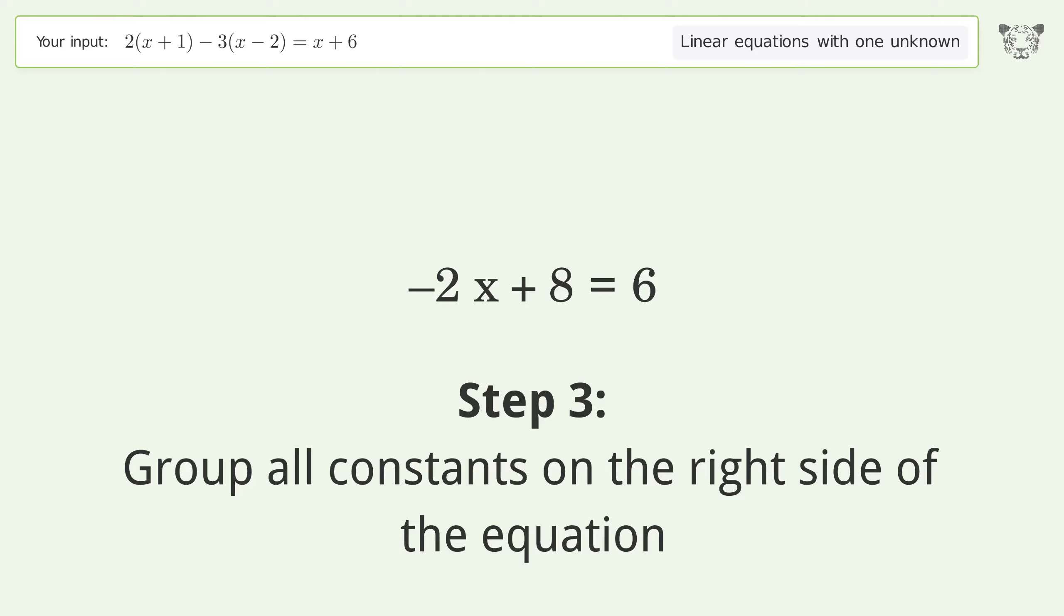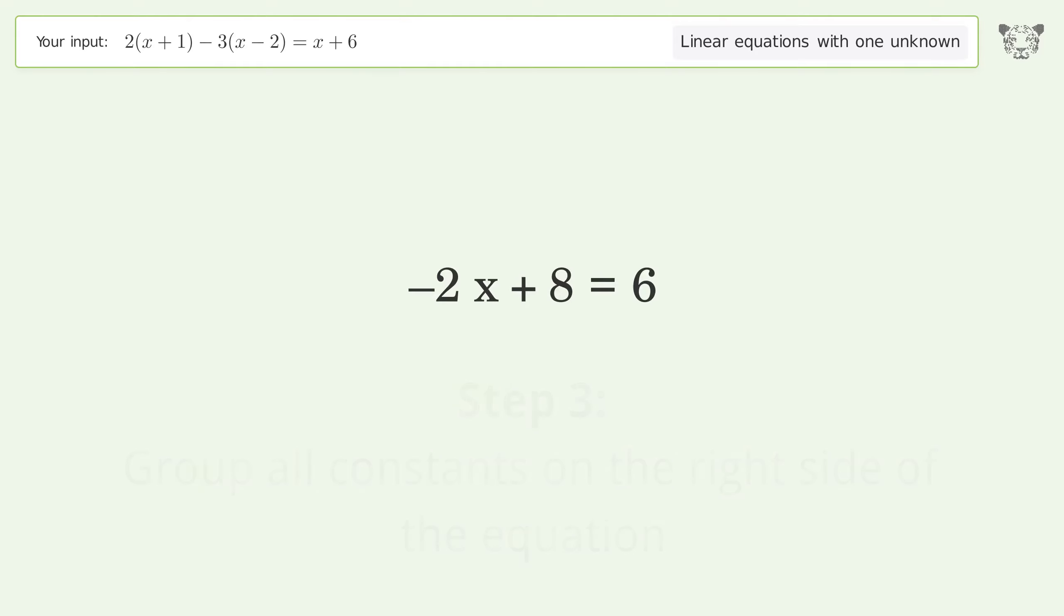Group all constants on the right side of the equation. Subtract 8 from both sides. Group like terms on the right side of the equation.